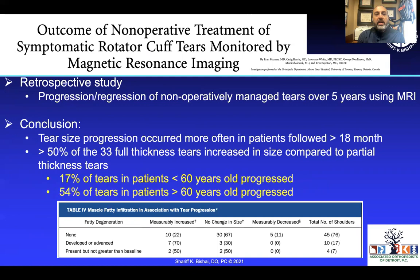Non-operative treatment of symptomatic tears progresses on MRI. Tear size progressed more often in patients after roughly 18 months. Greater than 50% of the 33 full-thickness tears in this study progressed compared to partial tears. 70% of tears in patients younger than 60 and 54% in patients older than 60 progressed. Interestingly, in this study the older the patient, the faster the tears progressed and became bigger.